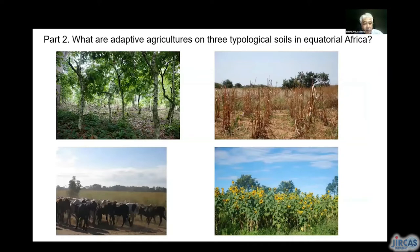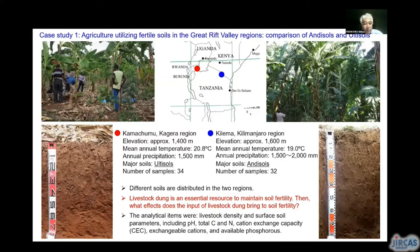In part two, I'd like to introduce some of my experience relating to soil properties and agricultural management in the three typological soils. In case study one, I'd like to emphasize the unique characteristics of volcanic soils. We surveyed two representative banana-cultivated areas of northern Tanzania: one is Alfisols near Lake Victoria, and the other is Andisols in the Kilimanjaro region. In both areas, livestock dung is an essential resource to maintain soil fertility, as farmers don't apply chemical fertilizer to crop plants. The question is: what effect does the input of livestock dung bring to soil fertility?